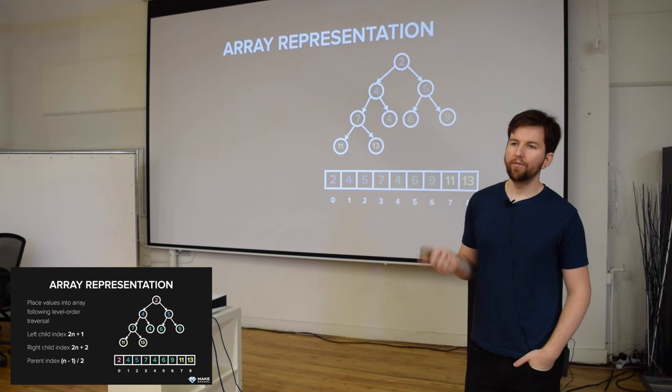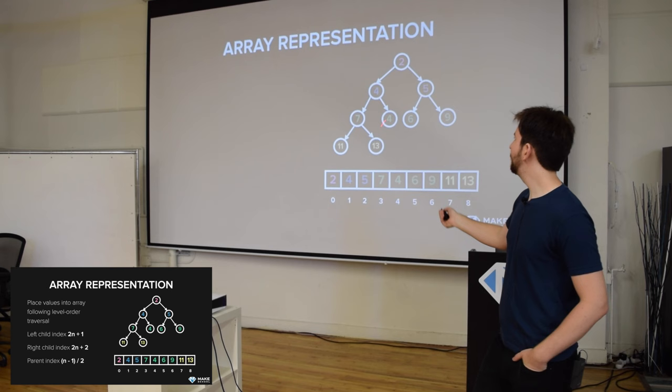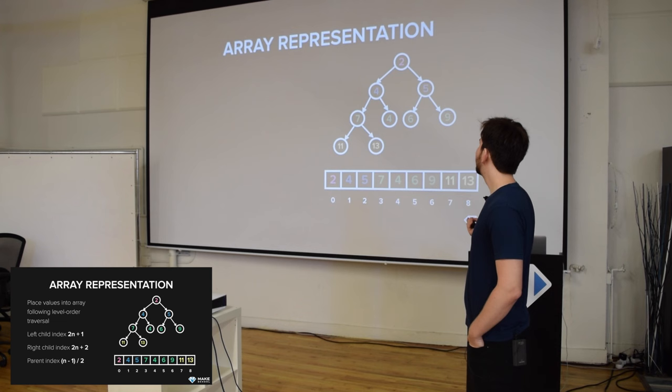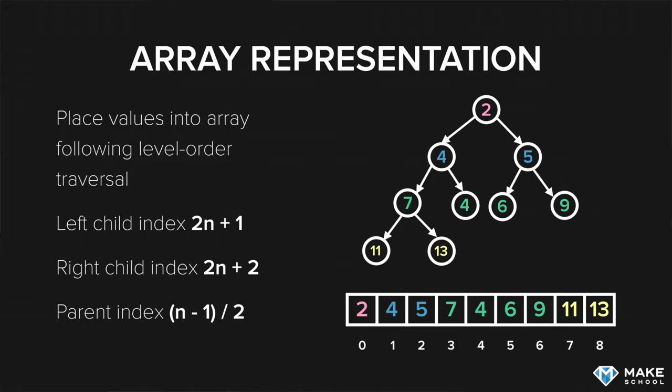A cool property of heaps is that because they're complete — because every node must be filled level by level and as left as possible — we can actually take this whole node data structure and instead store it as an array. We can visualize the heap like a tree but implement it as an array, and that has several advantages. The way you do it is you just follow level order traversal — breadth first — and stick them in the array in that order.